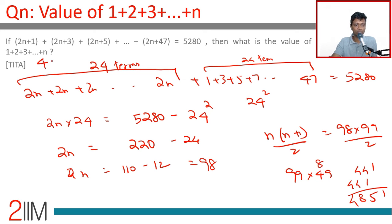You're breaking this, keeping the 2n terms separate, keeping the 1, 3, 5 terms separate. The sum of first n odd numbers is n². It's totally worthwhile remembering that. So we subtract that 24² from this, equate it to 2n × 24, and then we are done.